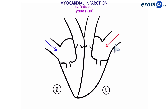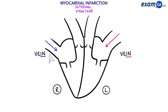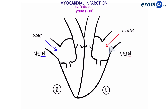These two blood vessels bring blood into the heart. These vessels are called veins, and a good way to remember that is 'vein' has 'in' at the end of it. It's important to note that veins bring in both types of blood to the heart — deoxygenated and oxygenated. The vein on the right side of the heart brings blood in from the body, and the vein on the left side of the heart brings blood from the lungs. They are called the vena cava and pulmonary vein.